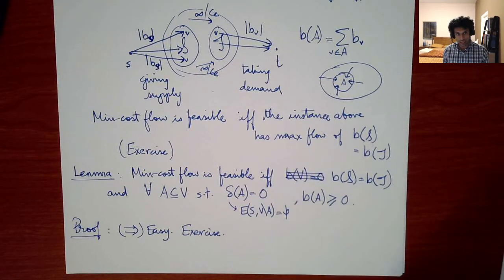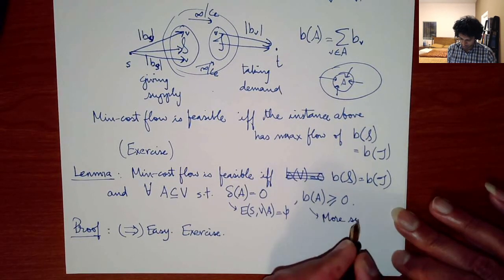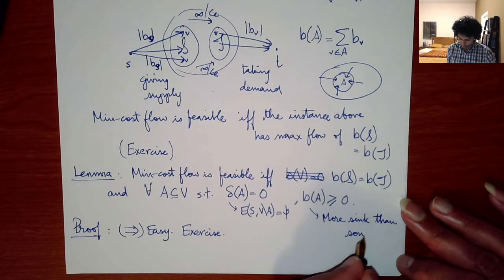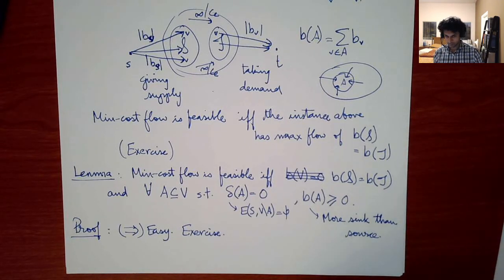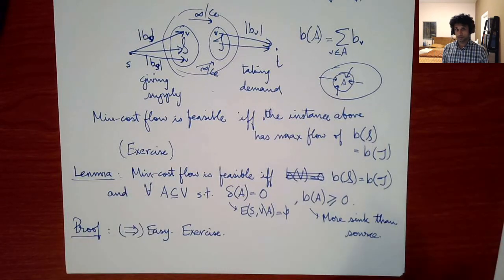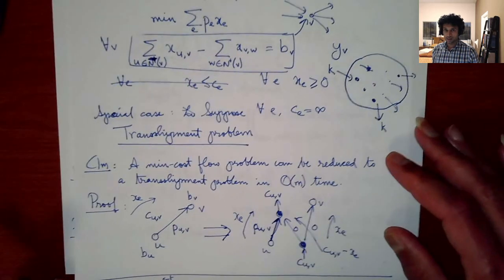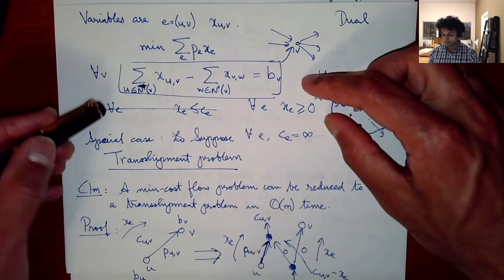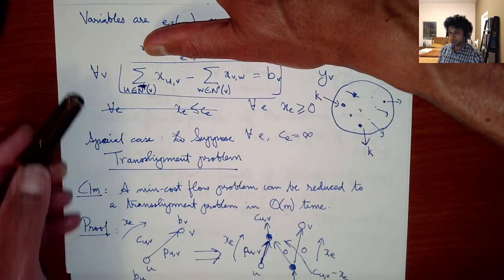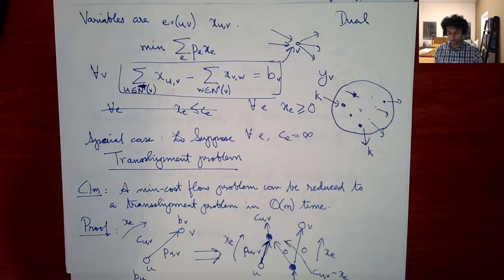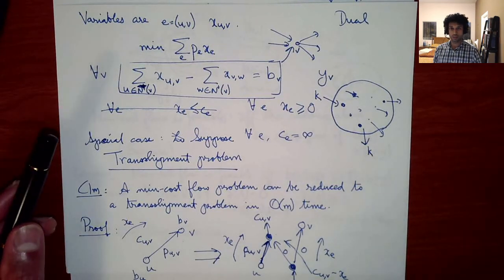If a set A has no outgoing edges, there is no way that set could be sending net flow, so the sum of B_V over A must be greater than 0 — meaning more sink than source. This is the easy direction.